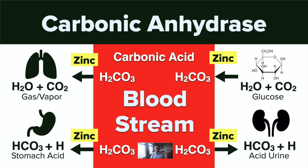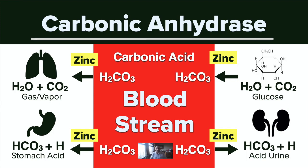With the advent of oxygen hitting the planet billions of years ago, we needed a strategy to help deal with oxygen metabolism. Oxygen — that odorless, tasteless, invisible, mysterious, paradoxical element — needs to be regulated. The regulation of oxygen is via the carbonic anhydrase enzyme, which is a zinc-dependent enzyme that makes carbonic acid.